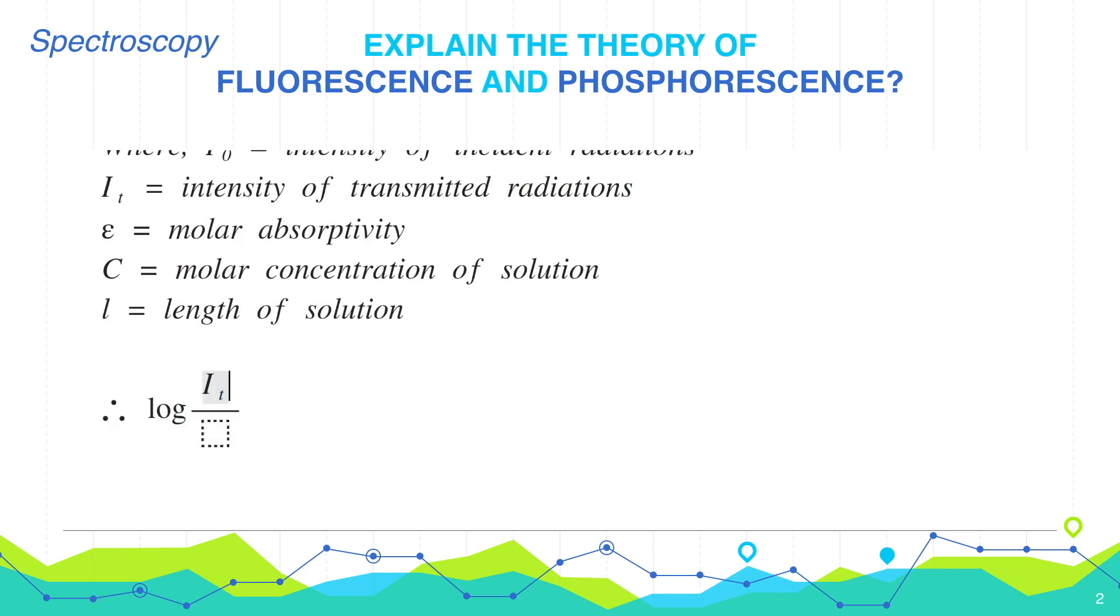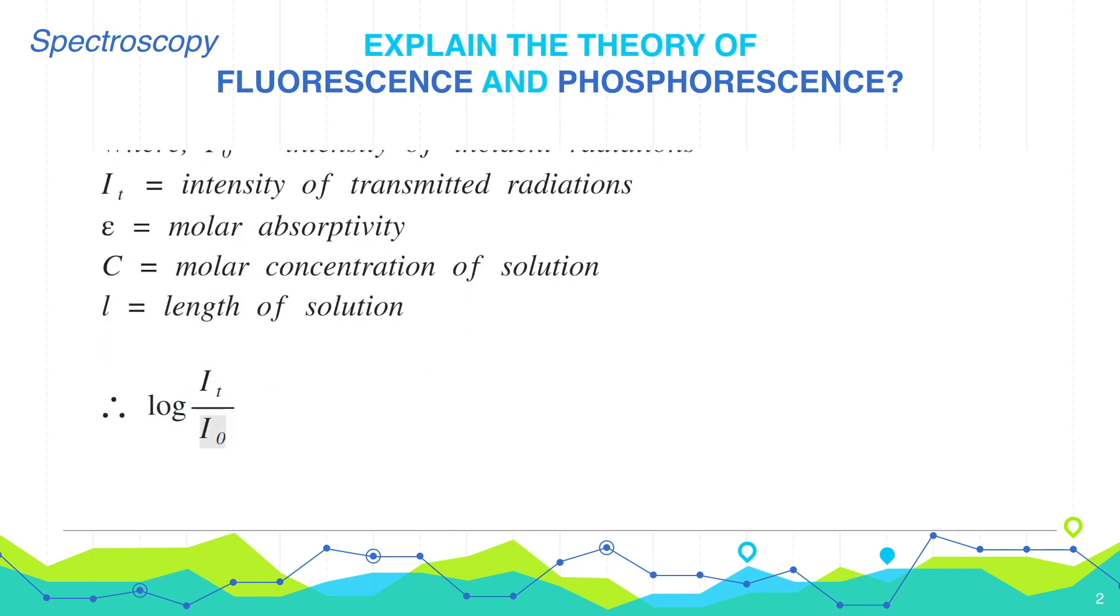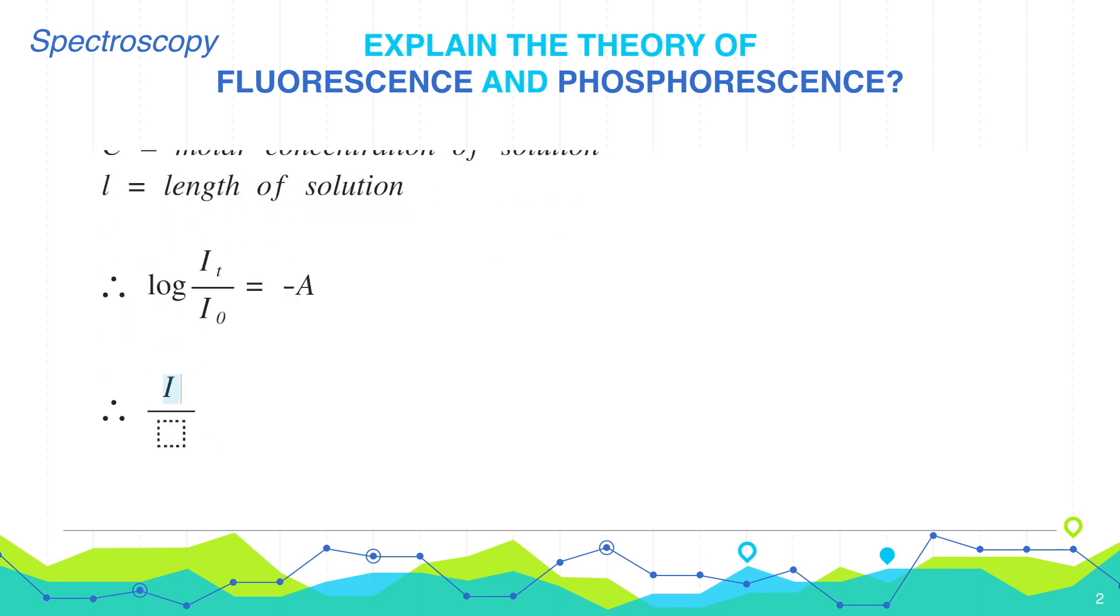Let's inverse the ratio inside the log, so it becomes log of It by I0 equals minus A. Therefore, It by I0 equals 10 to the power minus A, and It equals I0 times 10 to the power minus A, which can also be written as It equals I0 e to the power minus 2.303A.